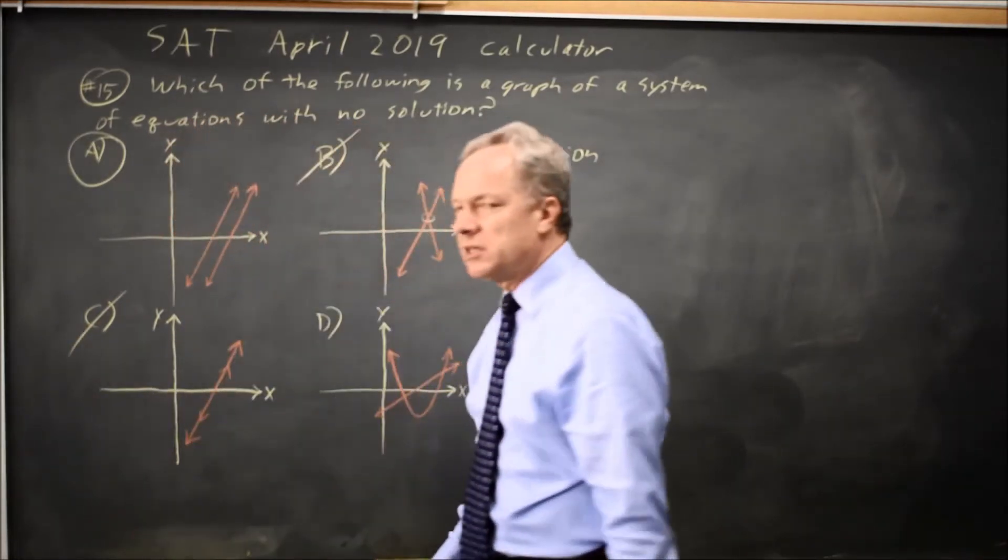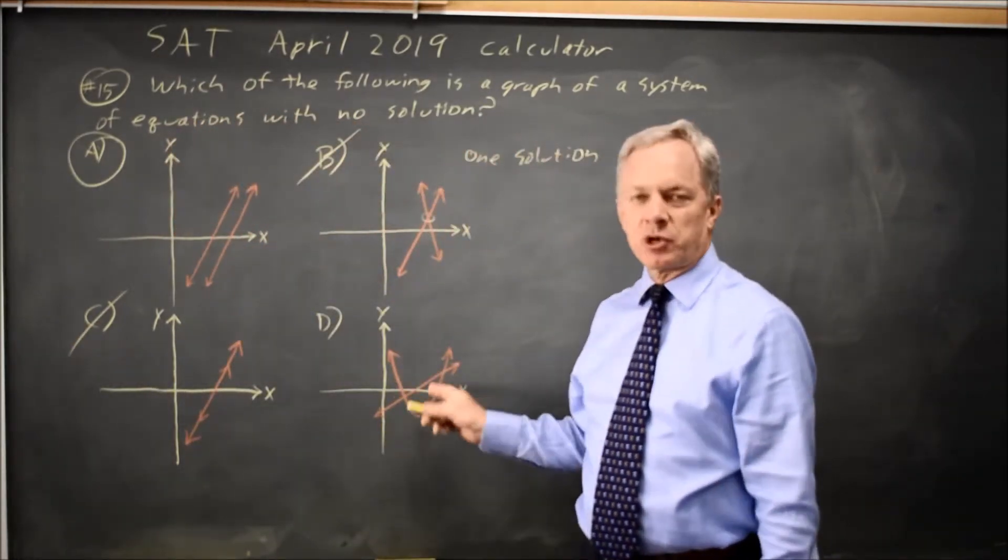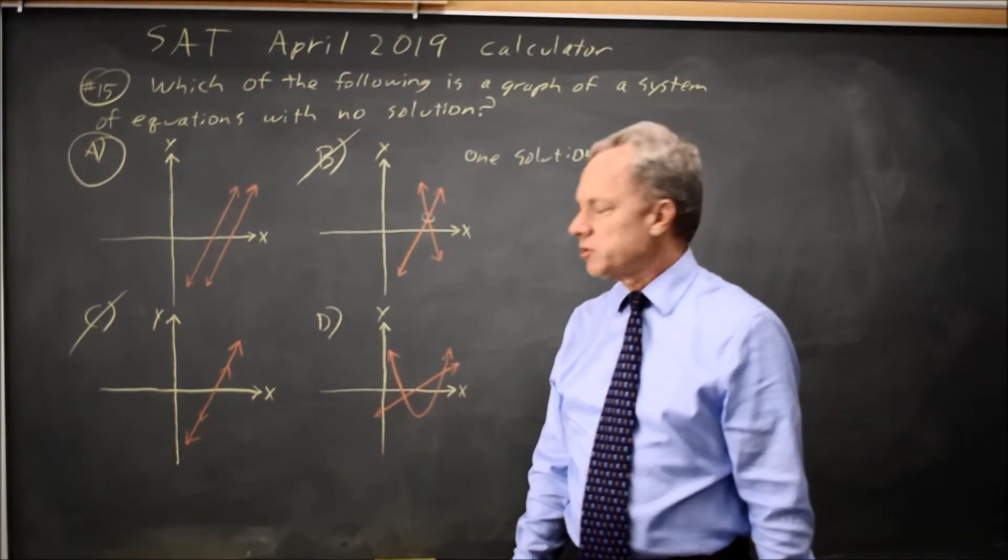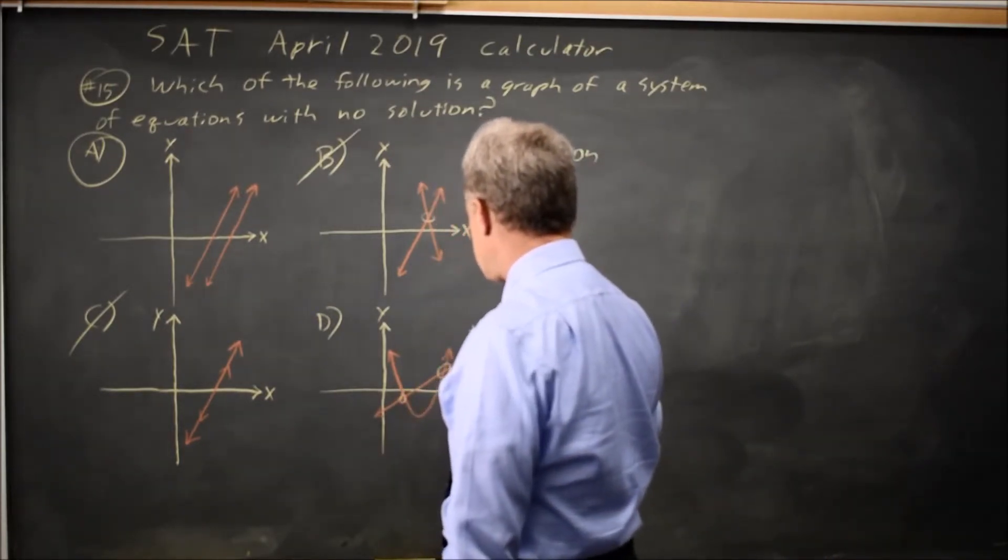In choice D we have what looks like a parabola opening up and then a line that intersects that parabola in two points. So that's two solutions.